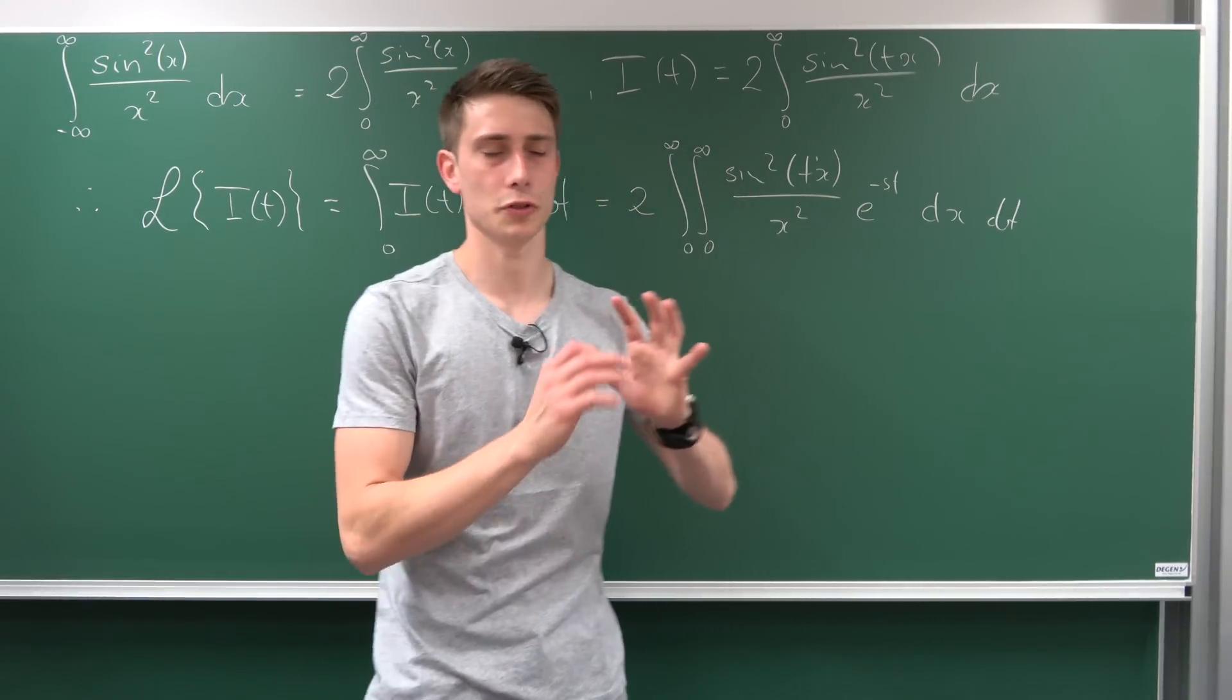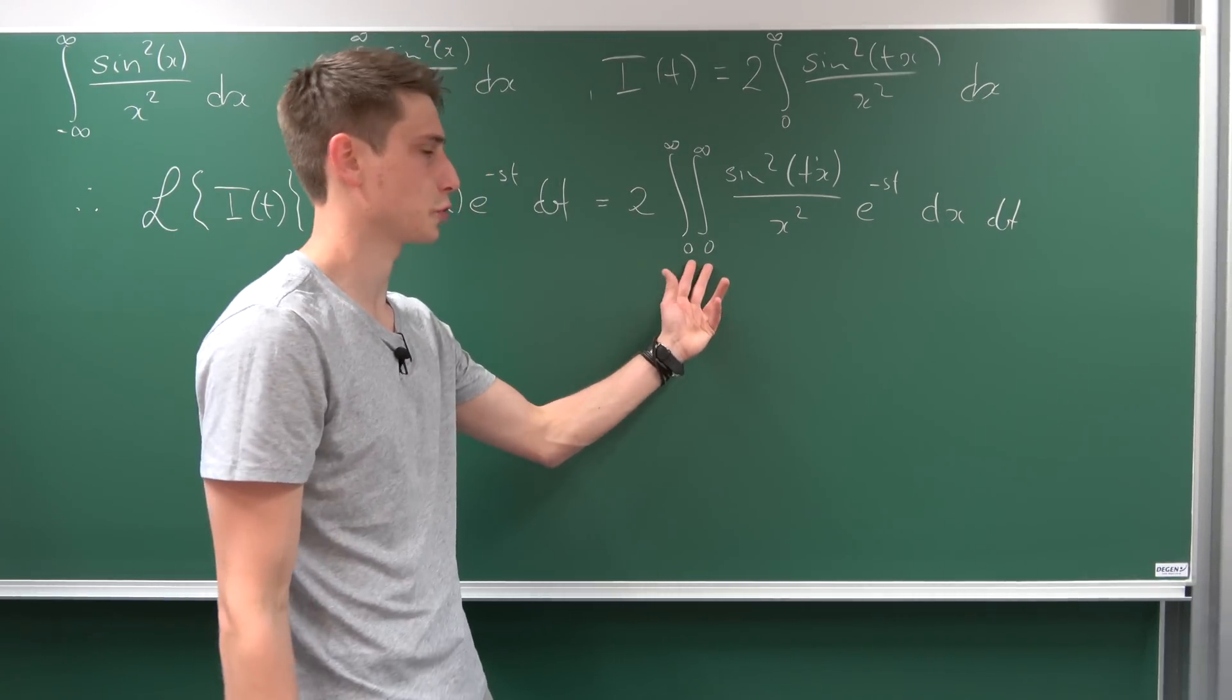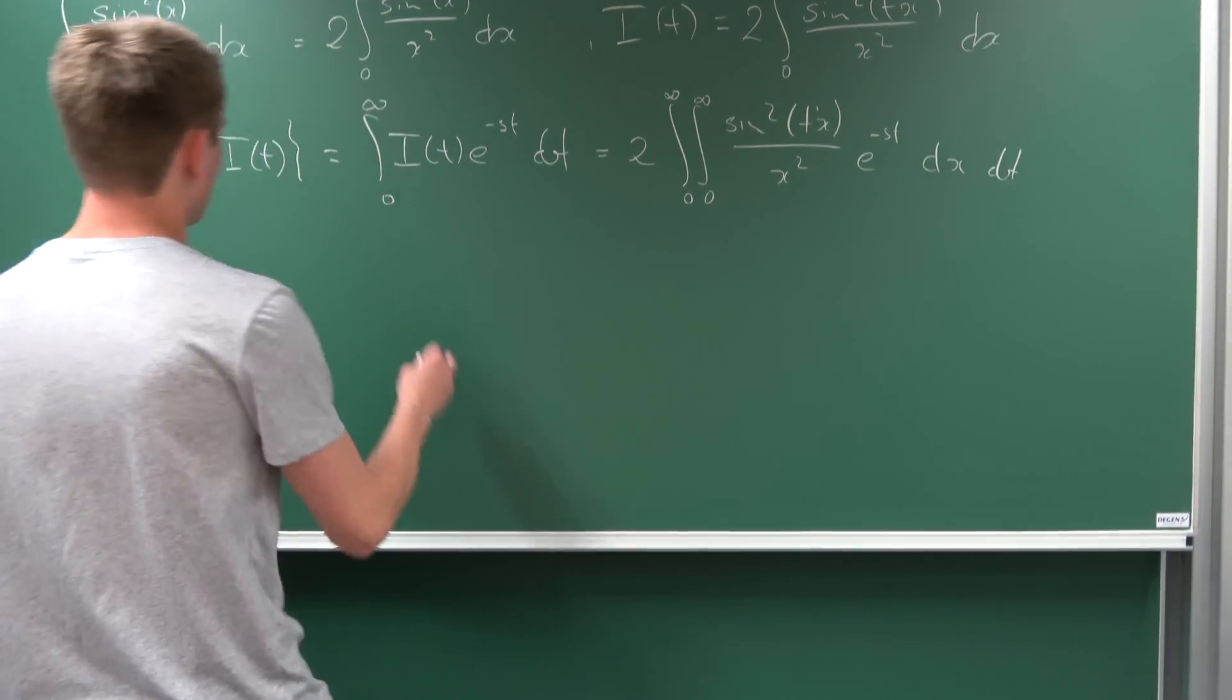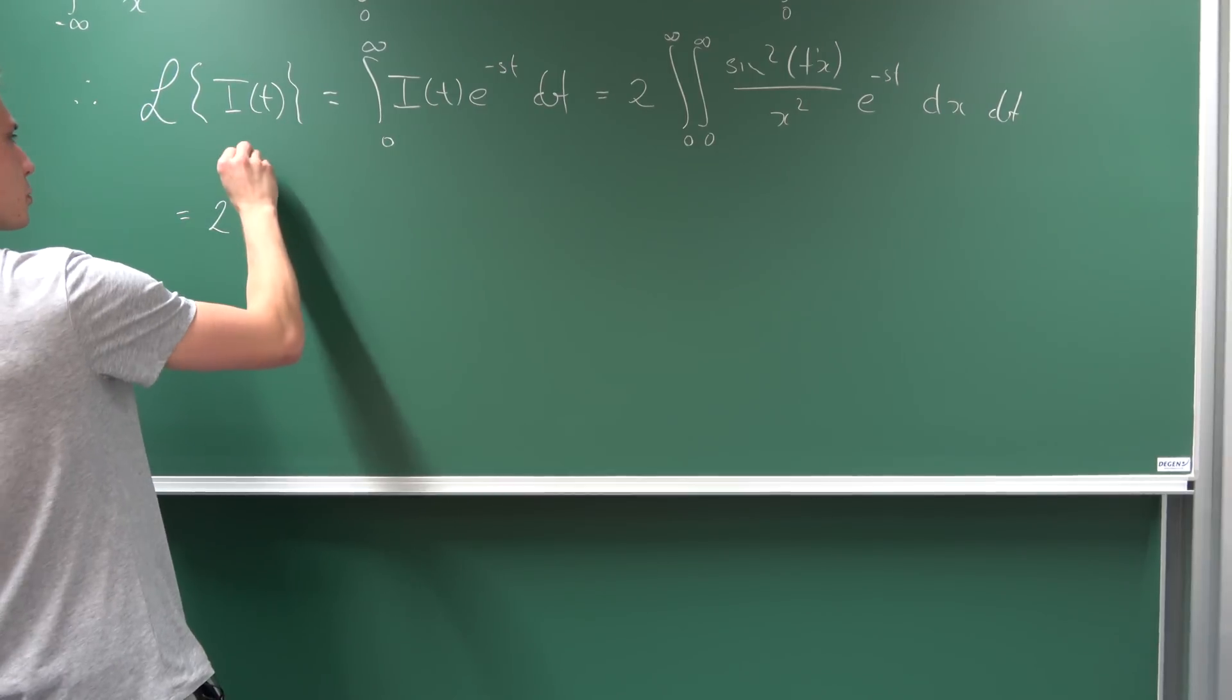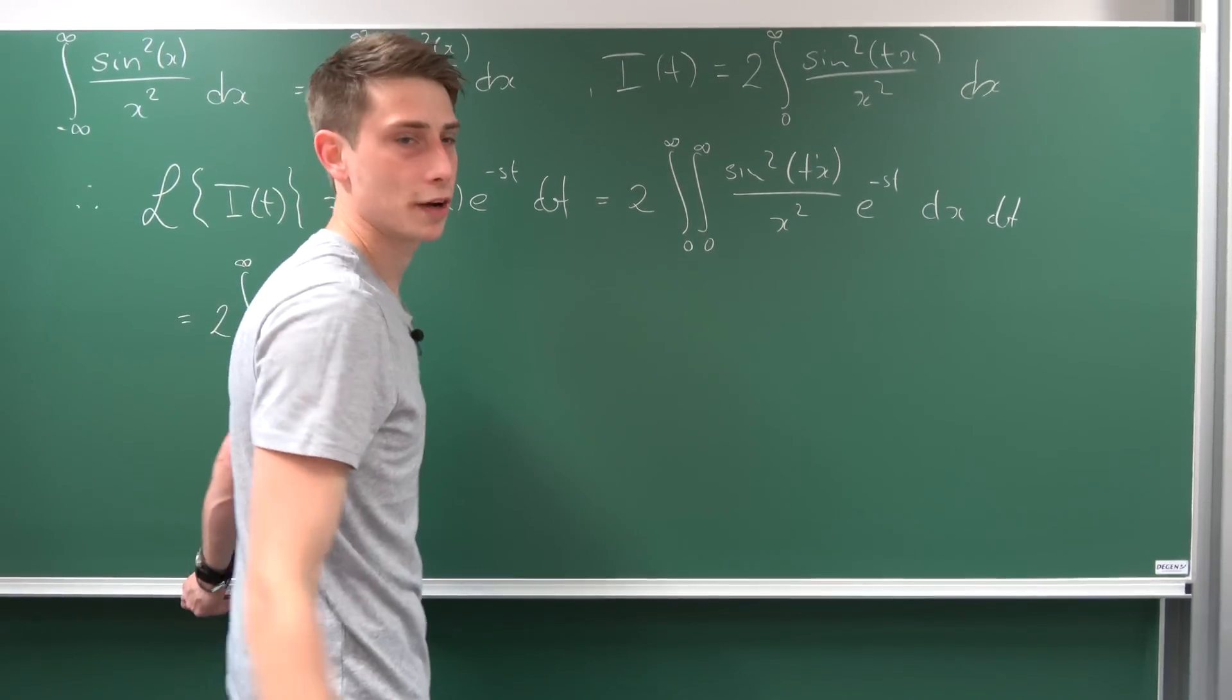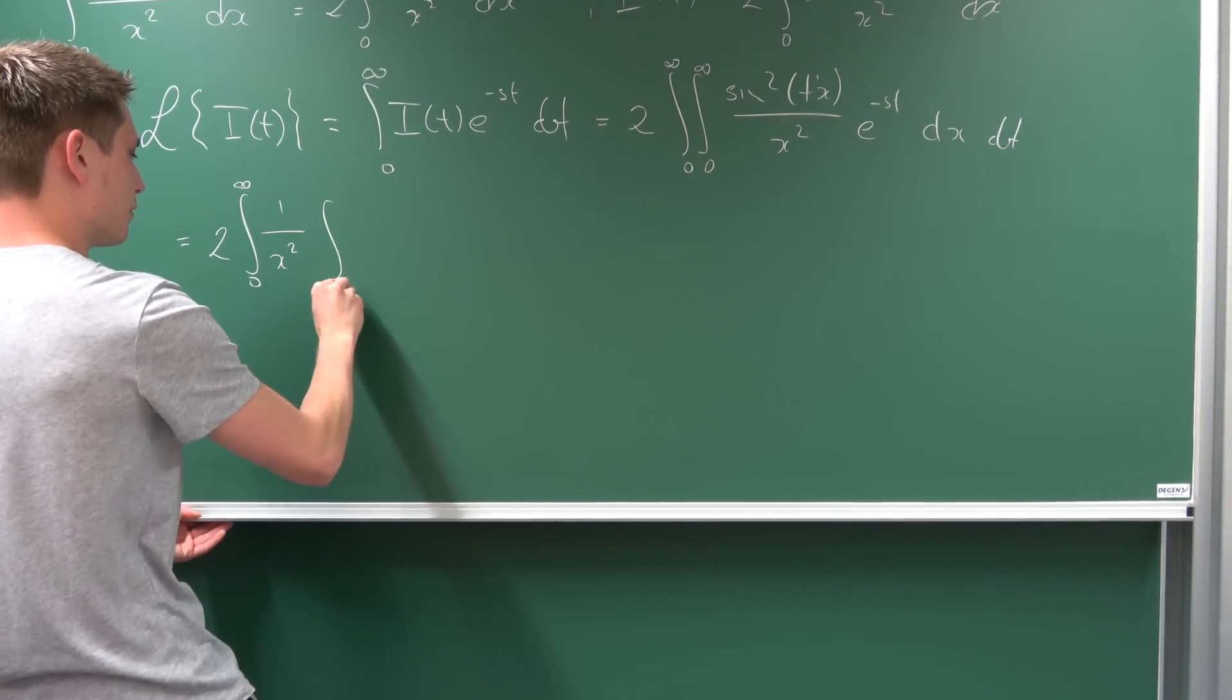I've fought these mathematical bad boys before, so without any restrictions we're going to change the order of integration because we just can. So we have 2 times the integral, now from x going 0 to infinity. I'm bringing the factor of 1/x² to the front.